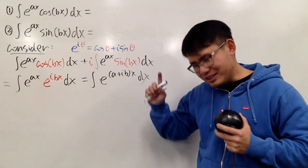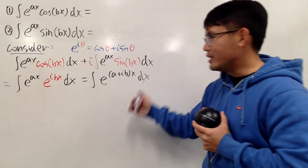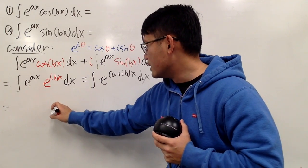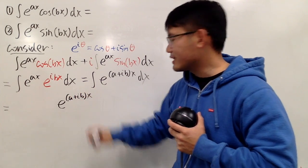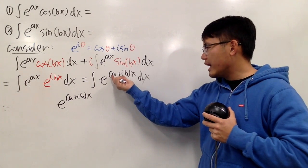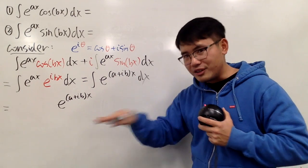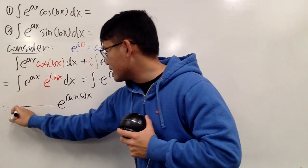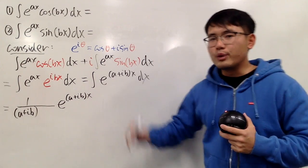To integrate this is very nice, because this is like integrating e to a constant multiple times x. This part stays, so we write e to the (a plus ib) times x. However, don't forget: the derivative of (a plus ib)x is just a plus ib, so when you take the anti-derivative you have to divide by a plus ib.